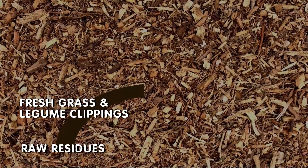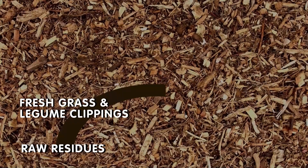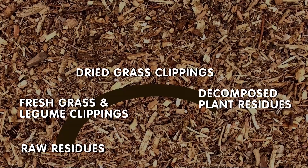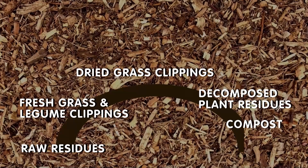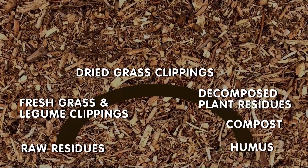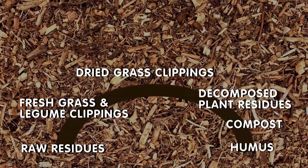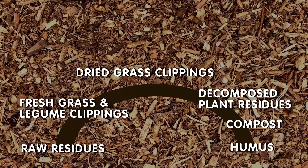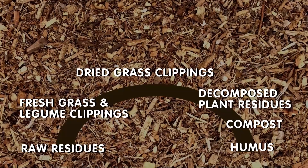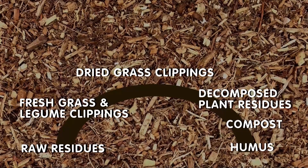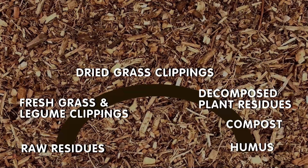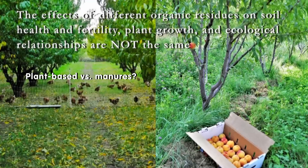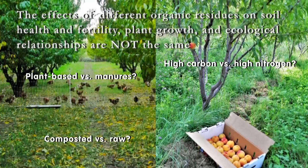We talked about the difference between raw residues, decomposing residues like fresh grass clippings and legume clippings, to more decomposed organic matter — dried grass clippings, decomposed plant residues, compost, better-decomposed compost — all the way down to humus. We discovered that humus isn't even a single entity; it's made up of different components. When planning your soil organic matter systems, think about including these different residues along the continuum.